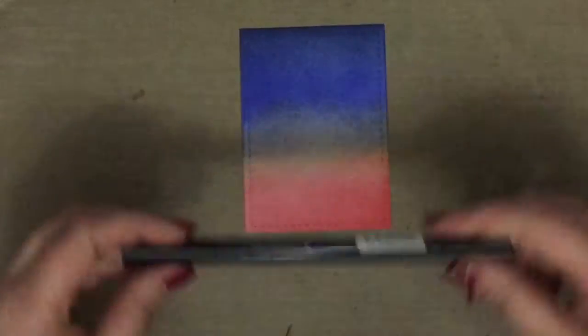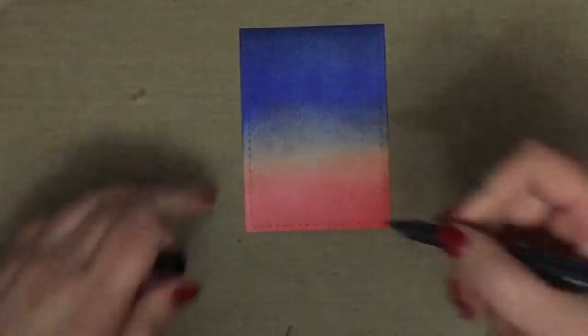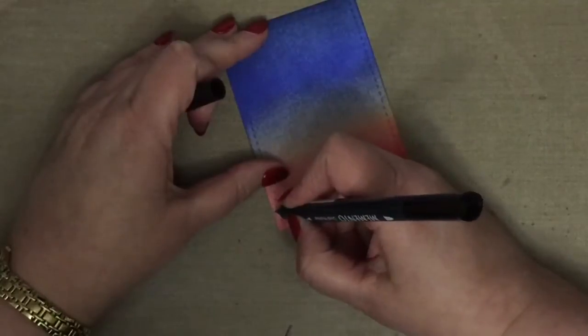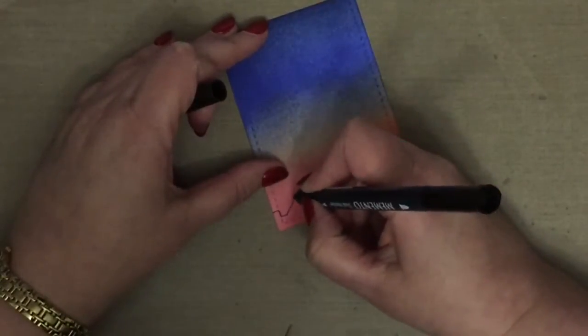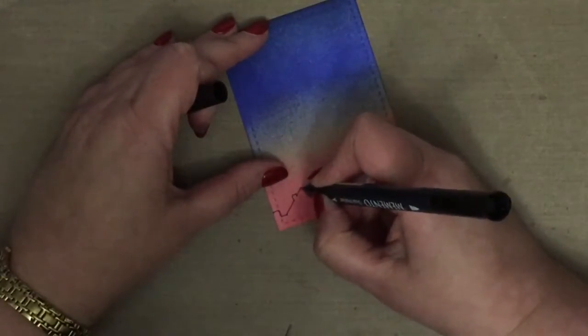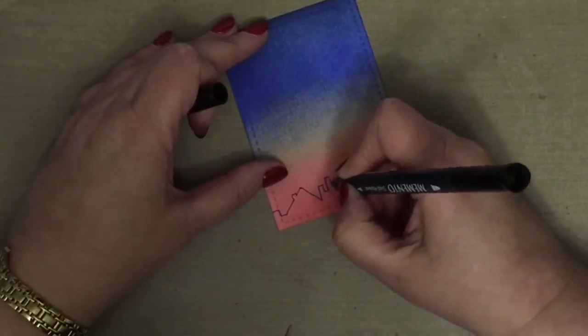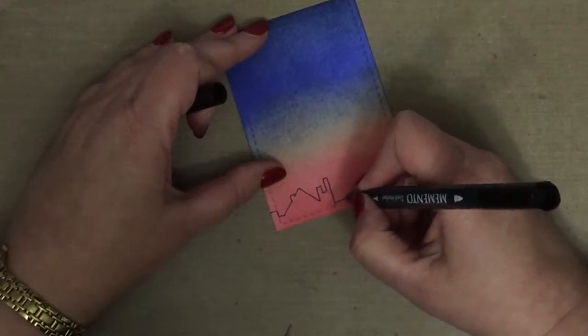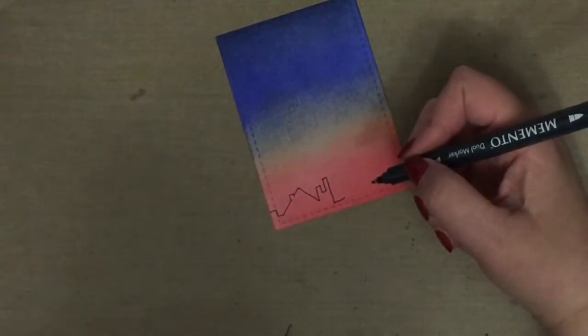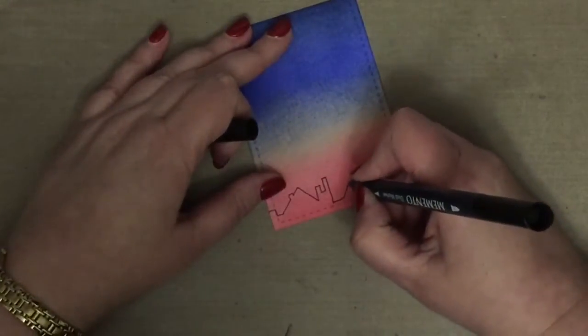Once I had that I took out my Memento Tuxedo Black marker and I just freehand drew some rooftops and lots of chimneys in black and eventually got around to coloring that in. I'm just drawing this. I didn't have any idea what I was going to do to start with.